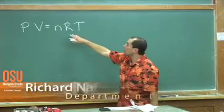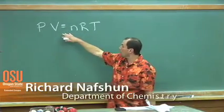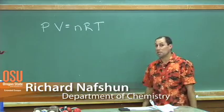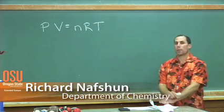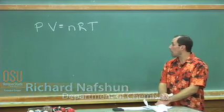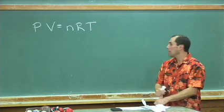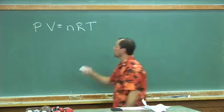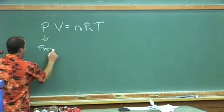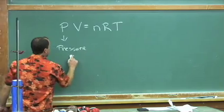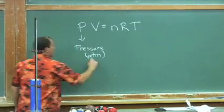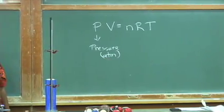Hi. In your readings on the worksheets and in homework, we've been taking a look at an equation of state, as we call it. PV equals nRT describes a gas. P is the pressure. The units that we appreciate using for pressure are ATMs, or atmospheres.